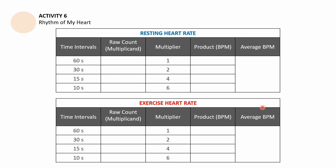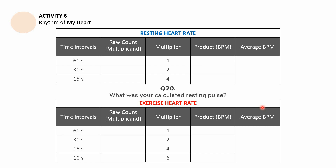The two tables look really similar. The difference is just what you were doing. For resting heart rate, you were just seated. For exercise heart rate, you performed physical activity.